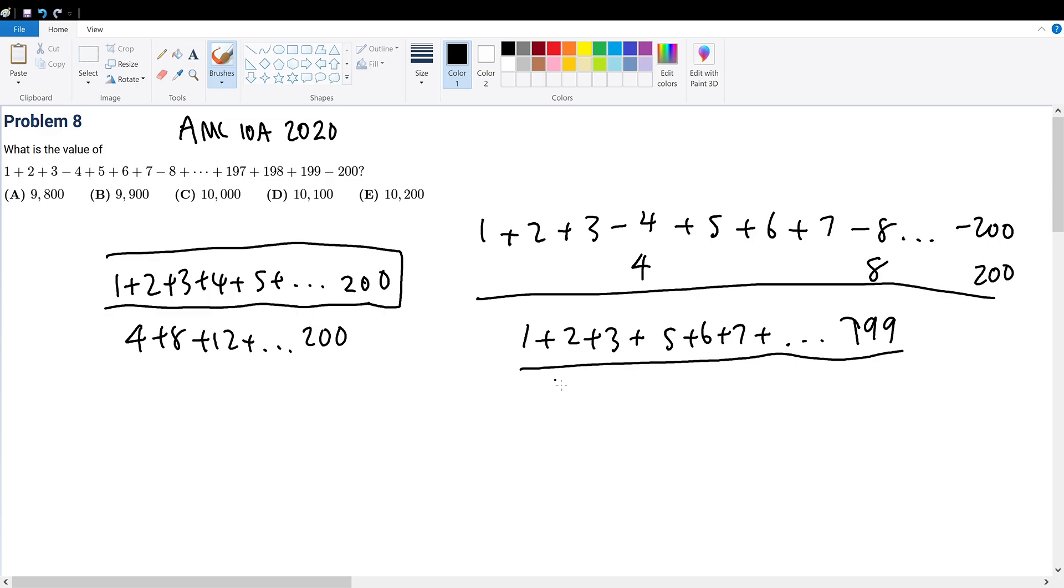So in order to add it back in to form an arithmetic sequence, we add the sequence 4, 8, 12, 16, etc. until 200 again. So we added it twice as a grand total to form 1 plus 2 plus 3 plus 4 plus 5 all the way to 200.